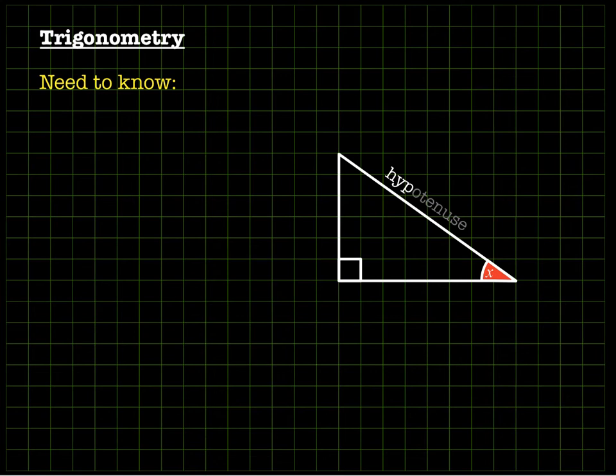The one we call the opposite side is the one that's opposite the angle that's relevant to the problem. So the angle in this problem is the one that I've labeled in red with X, and opposite that is the opposite side.